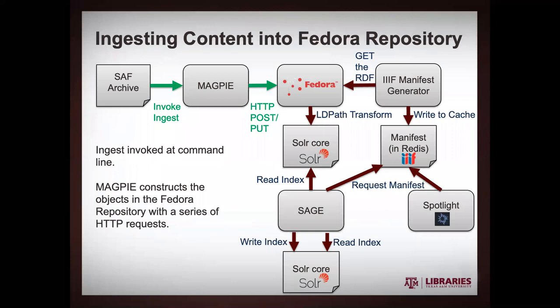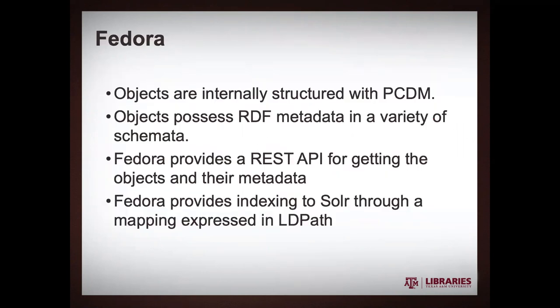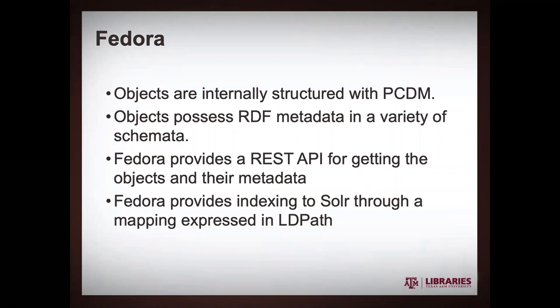Here's what that looks like at the ingest phase. We invoke the ingest into Magpie at the command line — we're not actually using the GUI for this use case — and then Magpie will construct the objects in Fedora with a bunch of HTTP calls. In Fedora, the objects are structured as PCDM objects, having RDF metadata in all the different schemata that the librarians have requested. Fedora supplies a REST API that allows us to get at the objects, resources, and metadata. Fedora also enables indexing to Solr, and that can be customized with an LD Path transform — Linked Data Path is the language there.